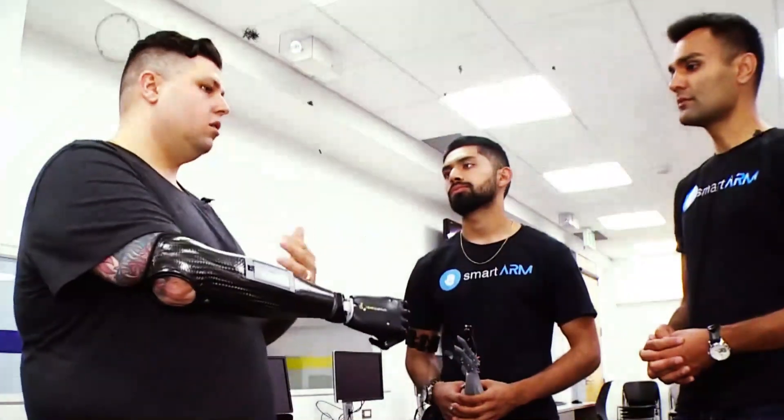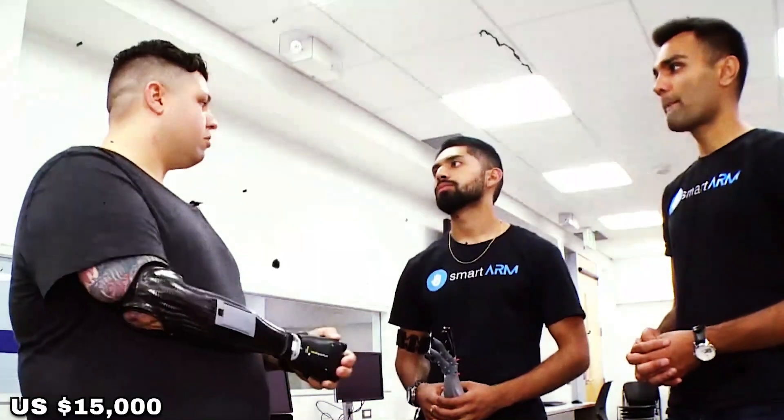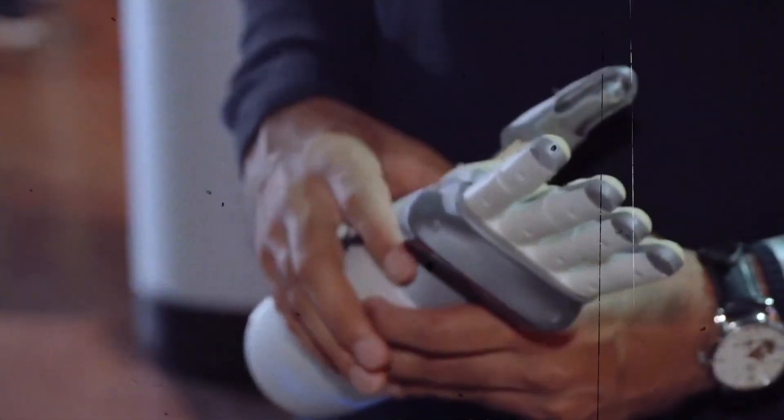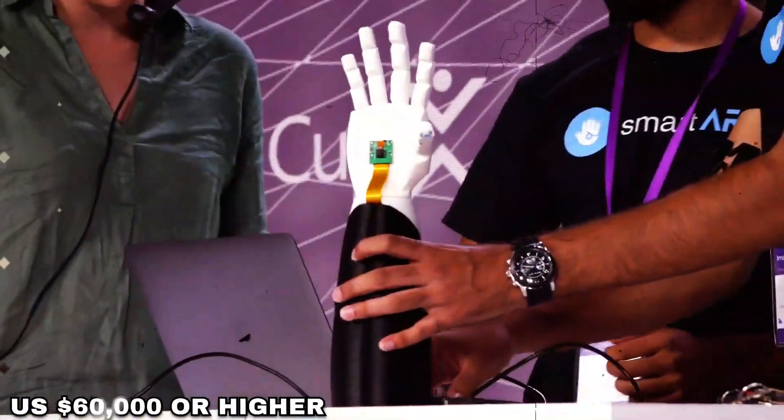The prosthetic is available for pre-order and can cost up to $15,000, whereas similar functioning prosthetics with independently movable fingers start at $60,000 or higher.